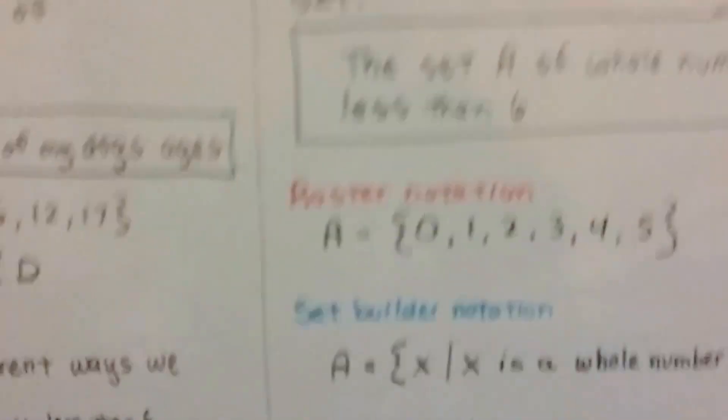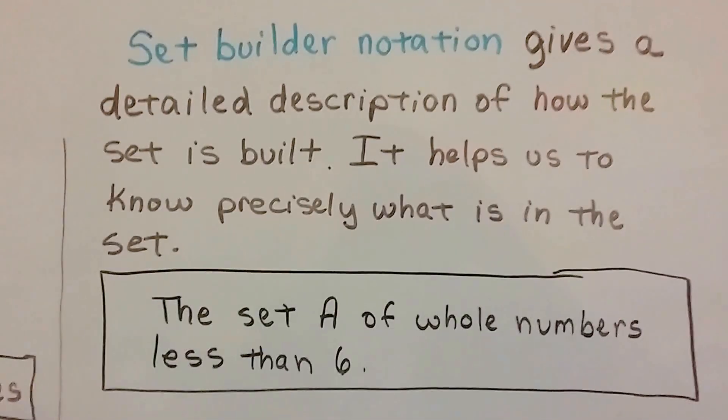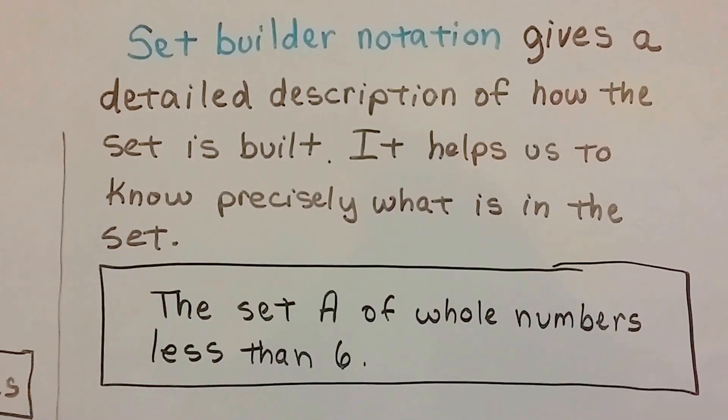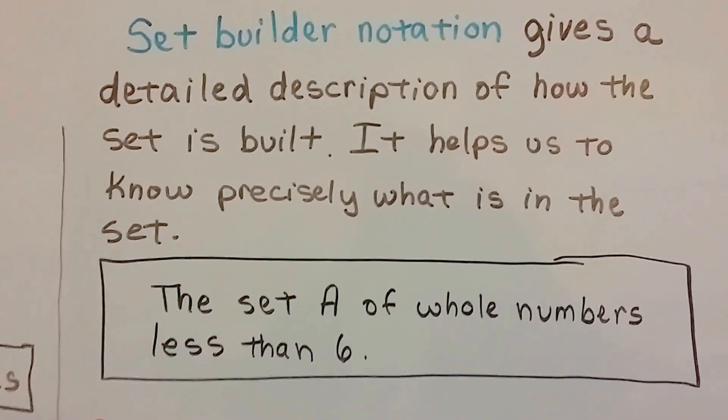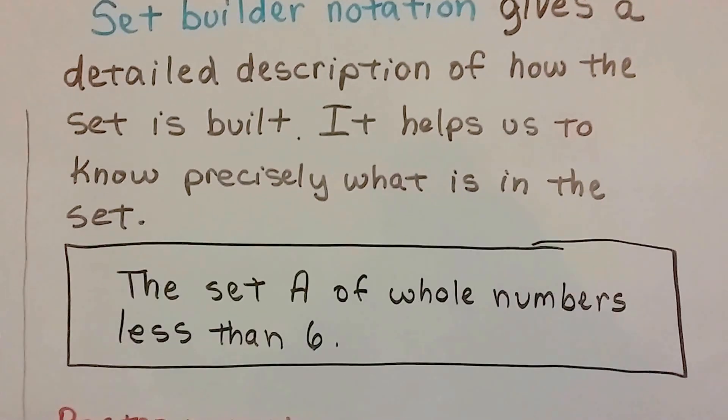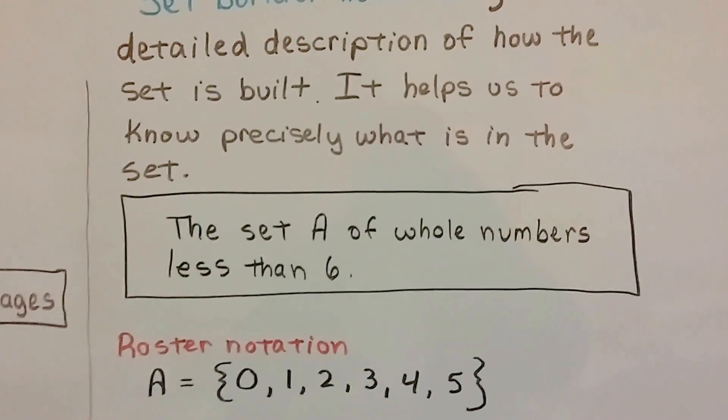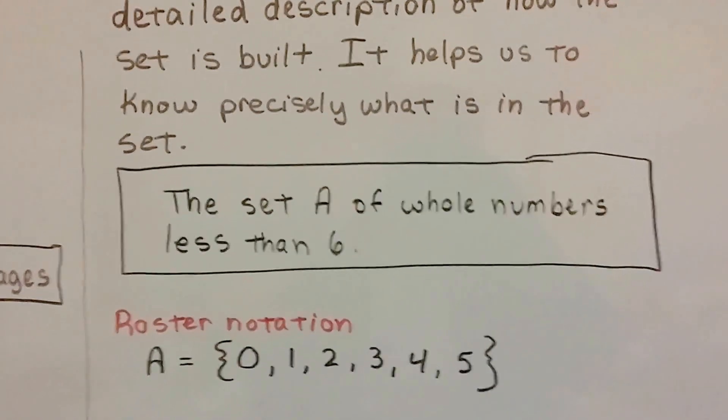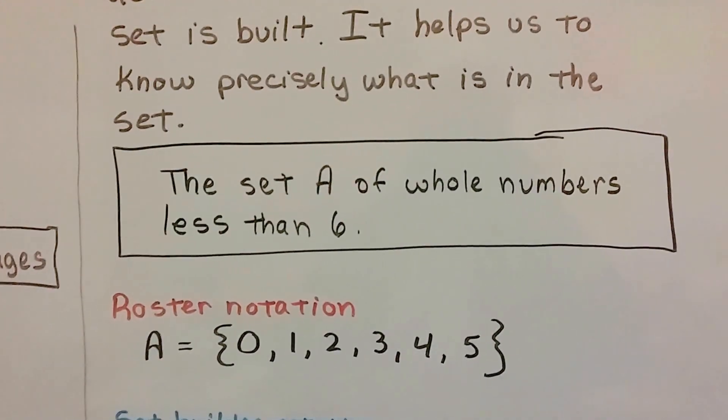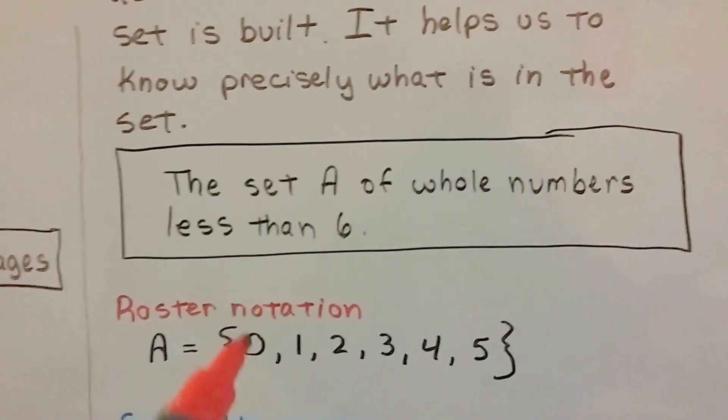Let me explain this a little more. The Set Builder Notation gives a detailed description of how the set is built. It helps us to know precisely what's in the set. If we needed to write the set A of whole numbers less than 6, in Roster Notation, the whole numbers less than 6 would be 0, 1, 2, 3, 4, 5. See? Natural numbers don't have the 0.